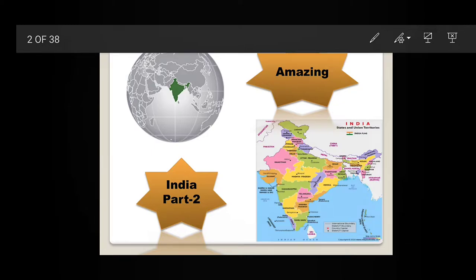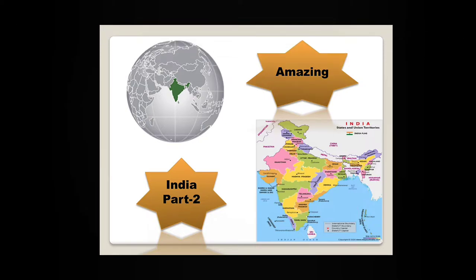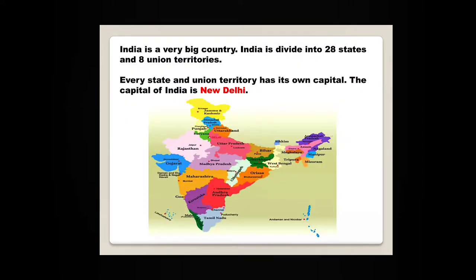Amazing India Part 2. In the previous video, we have learnt about the physical features of India — the six physical divisions of India. In this video, we are going to know about the 28 states and the 8 union territories of India. Are you all ready to learn? In this video we have given you the language of each state, its area, dance, the animal that is mostly found in the state, the tree that is mostly found, and the flower.